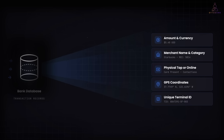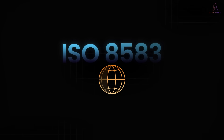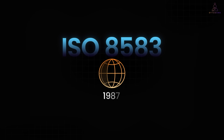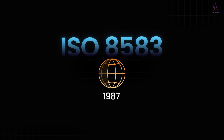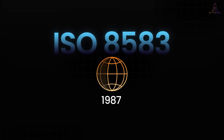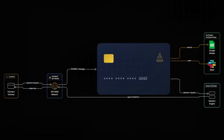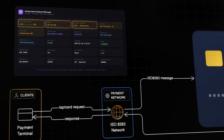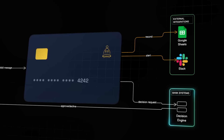And this is where programmable cards flip the model. The entire credit card ecosystem runs on a messaging protocol called ISO 8583. It was created in 1987 and it's still the backbone of almost every card transaction today. Think of it as a standardized format for payment messages. When you tap your card, the terminal packages your transaction into this format — card number, amount, merchant category, location, how you paid, and dozens of other fields. Every bank in the world knows how to read it because everyone agreed on the structure 40 years ago.